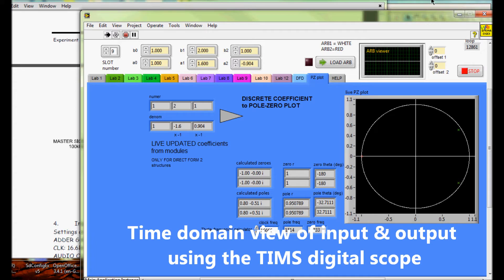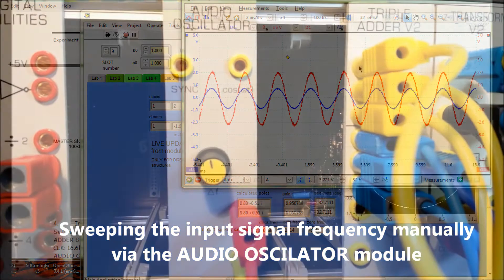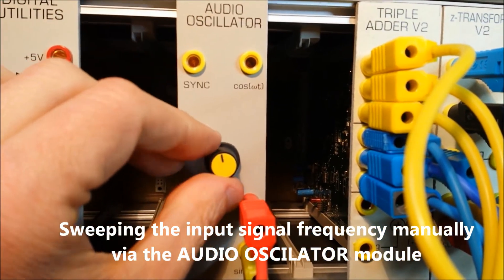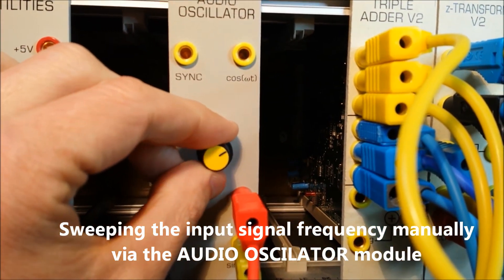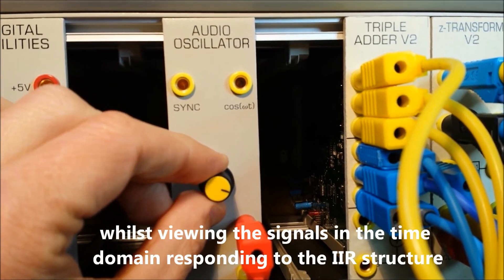Sweeping the input signal frequency through the IIR structure that has been constructed on the TIM system, we can now view the input and output signals via the inbuilt PicoScope that you have with your unit.